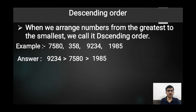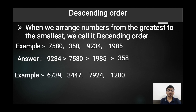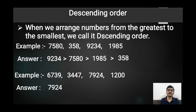Next example for descending order: 6739, 3447, 7924, and 1200. We compare the thousands place values: 6000, 3000, 7000, and 1000. Since 7000 is the greatest, we write 7924 first, then 6739, then 3447, and finally 1200.